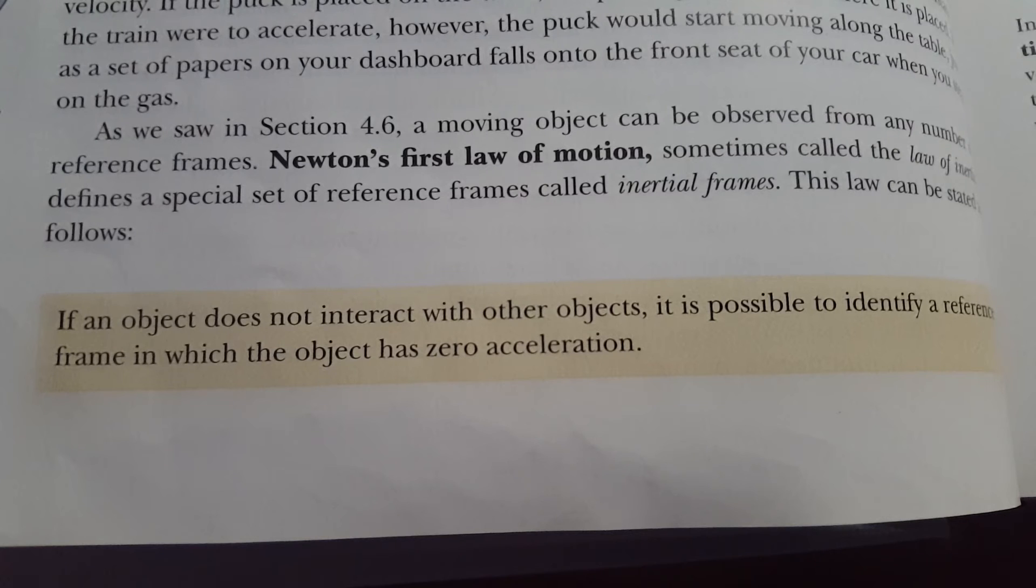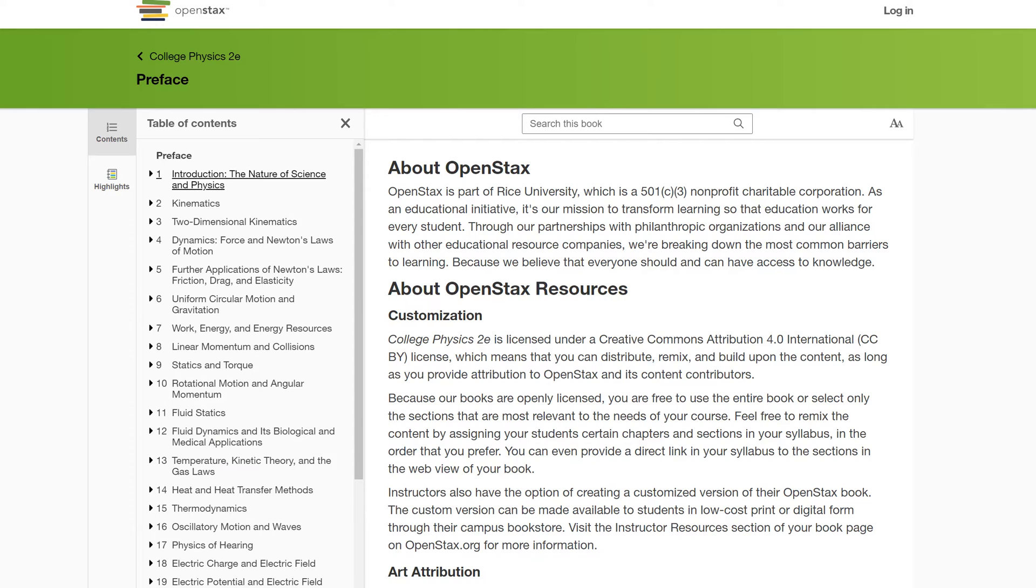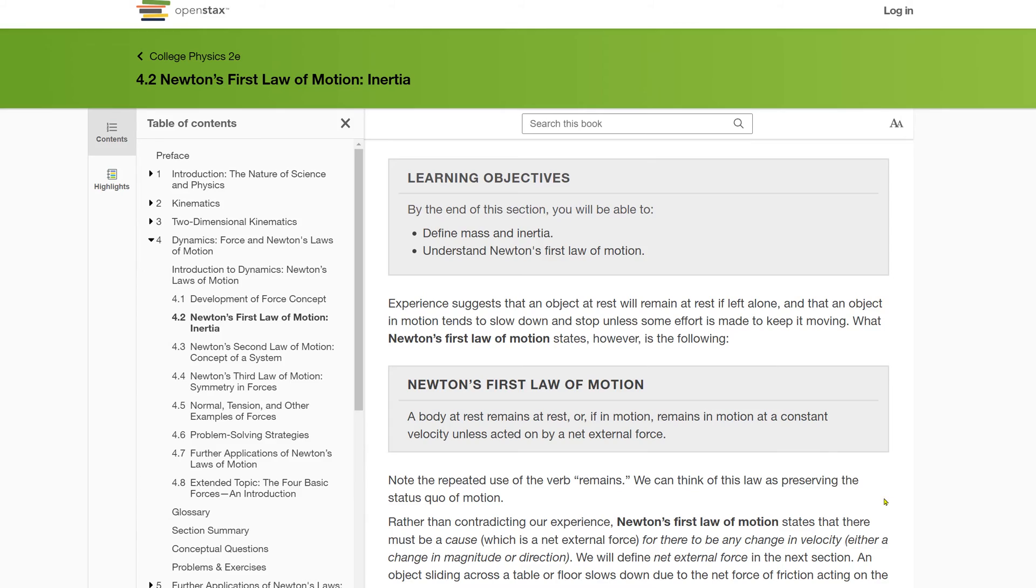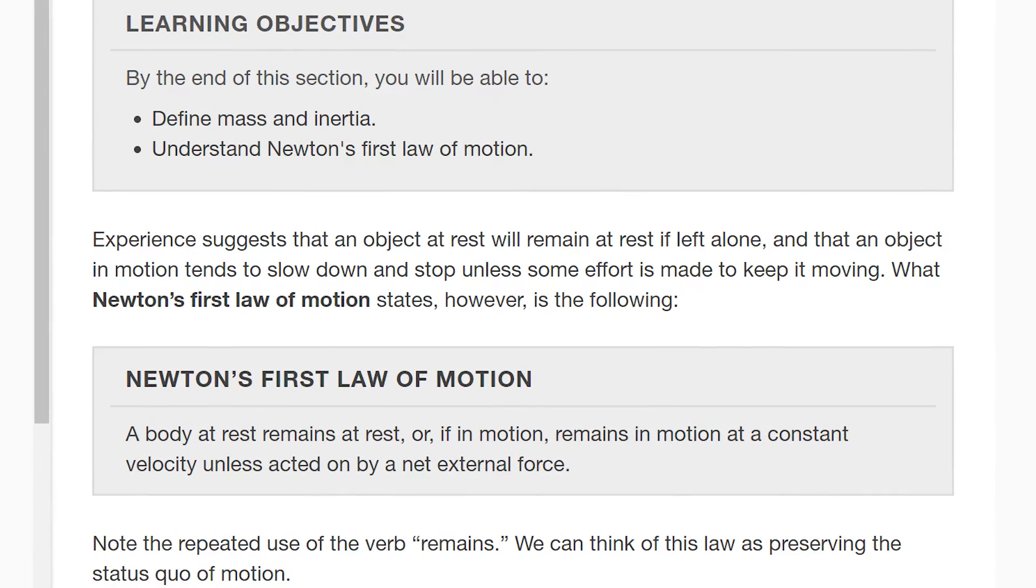If an object does not interact with other objects, it's possible to identify a reference frame in which the object has zero acceleration. Now I feel this is overly complicated for a first year physics student. An OpenStax book has a more straightforward definition. A body at rest remains at rest or if in motion remains in motion at constant velocity unless acted on by a net external force. But again, this is just my personal opinion. You may disagree with this.